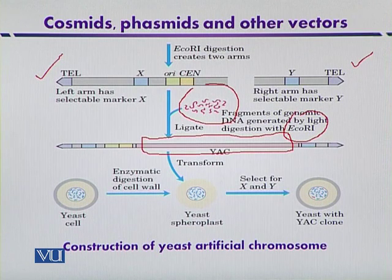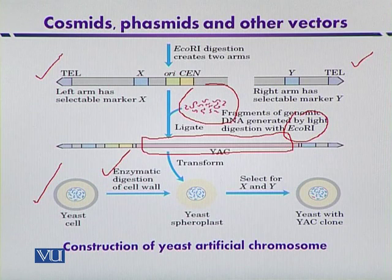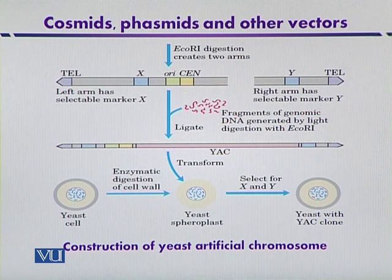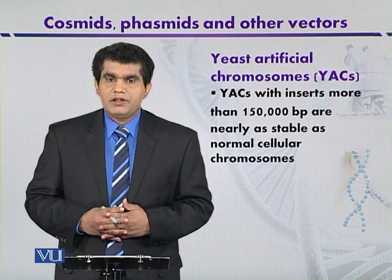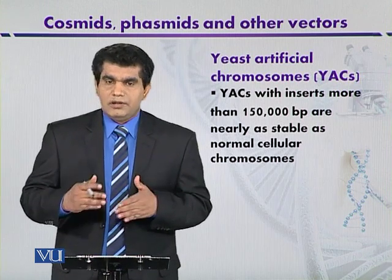The yeast cell can be further treated with different types of enzymes so that its cell wall is digested, and you can get a spheroplast. Spheroplast means it is a type of protoplast — that is, cell wall-less — and now it is easy to infect. After infection, recombinants can be selected on the basis of selectable markers X or Y. This is one of the strategies for cloning larger DNA fragments, especially from eukaryotes like humans, using yeast artificial chromosomes. Like the bacterial artificial chromosome, YACs can also be used to clone larger DNA fragments.